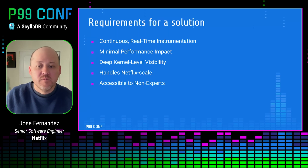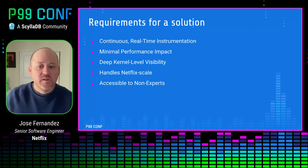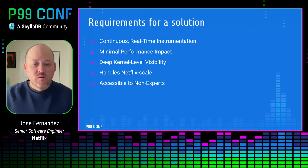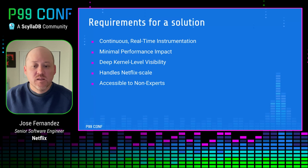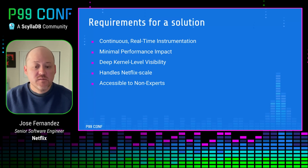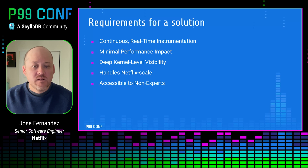Given all that, here are some key requirements for a solution to tackle noisy neighbors. First, we need continuous real-time instrumentation — this solution has to be running at all times, ensuring it is there when the issue happens. We also need minimal performance impact, so it's critical that our instrumentation doesn't introduce noticeable overhead. We need deep kernel visibility to monitor processes at the kernel level, with particular visibility into the Linux scheduler. We also need a solution that can handle Netflix-scale workloads. And finally, this solution should be accessible for non-experts — intuitive enough so that even those who aren't kernel experts can use it and get useful information from it.